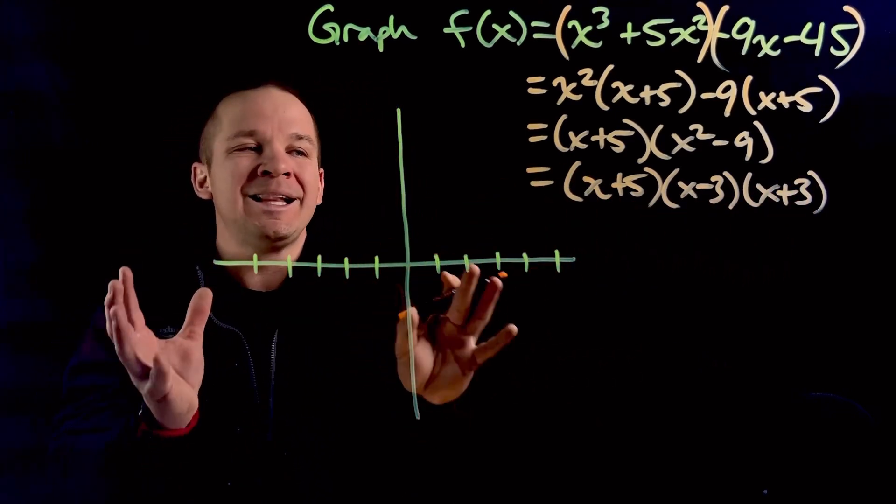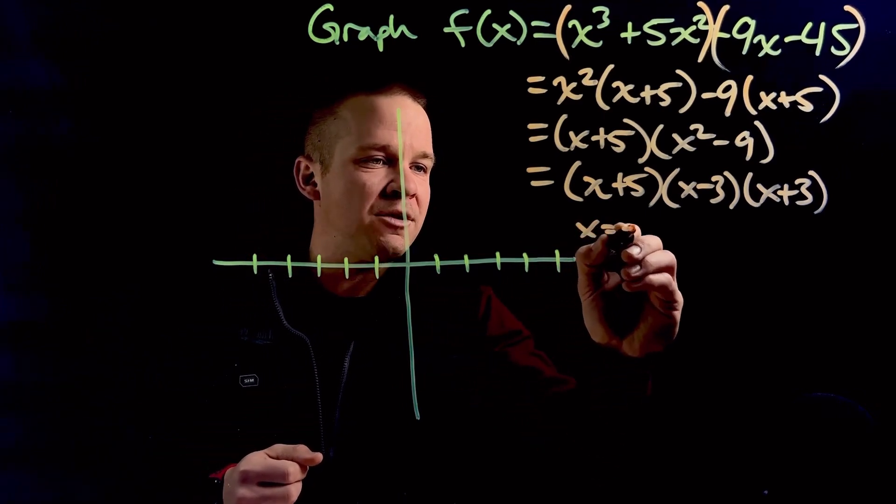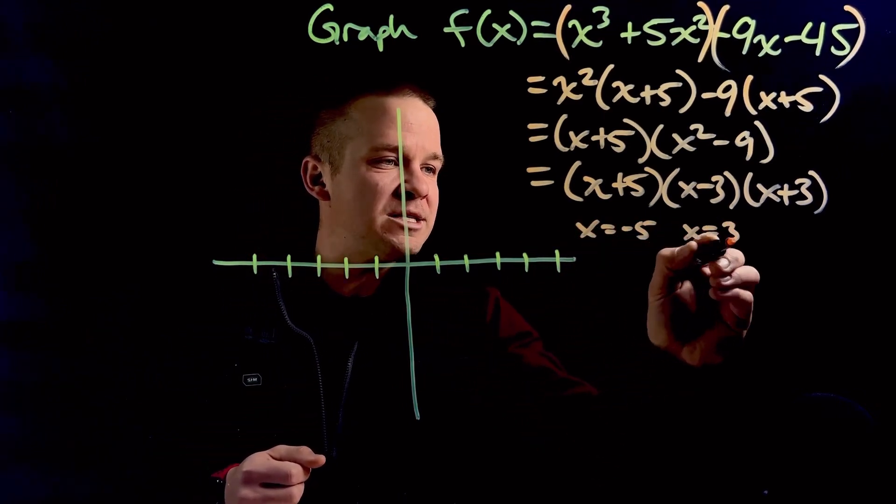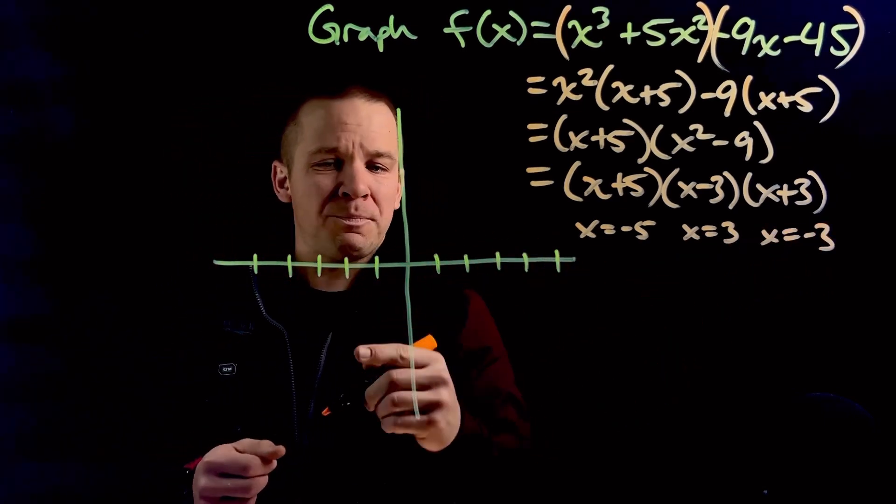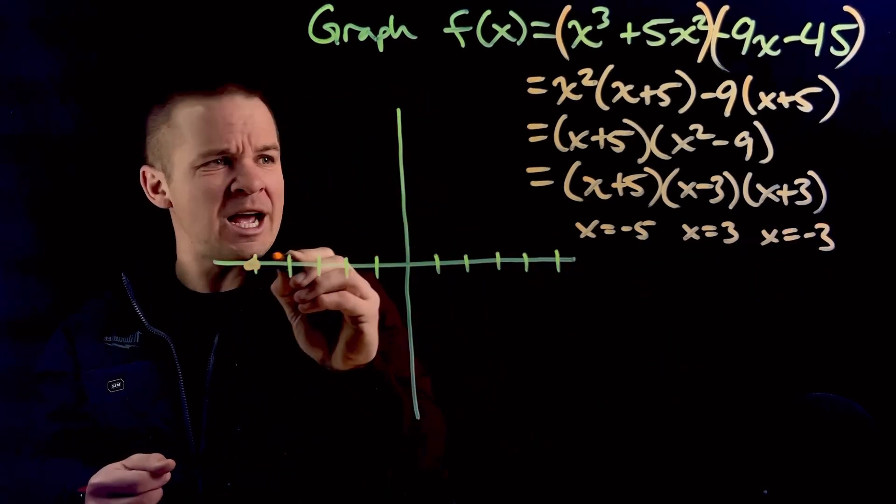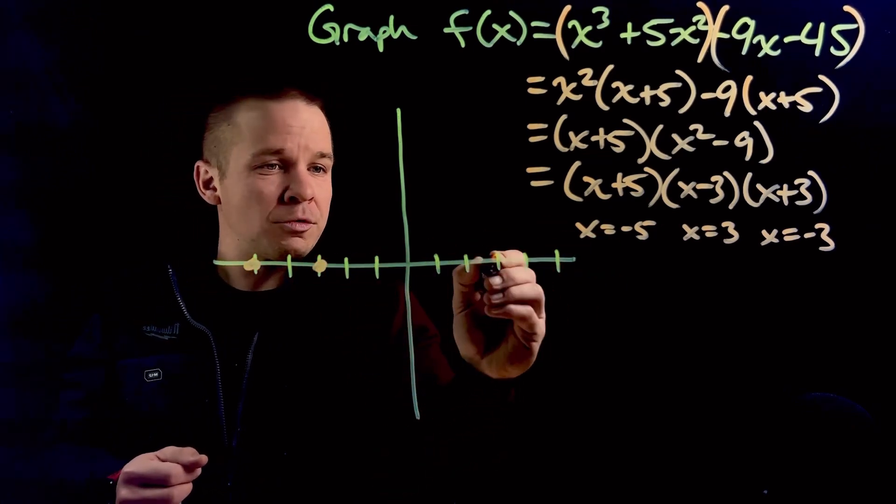Now I have this bad boy completely factored. I can get all my x-intercepts, which are going to be x equals negative 5, x equals positive 3, and x equals negative 3. Beautiful. Let's plot them right over here. We got negative 5, we got negative 3, we got positive 3.